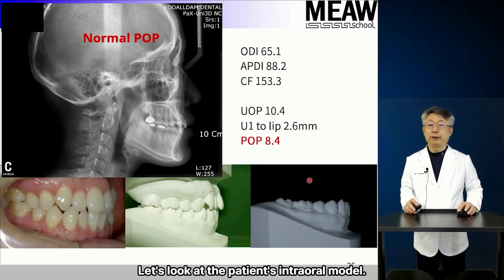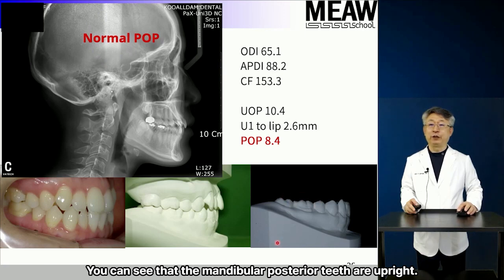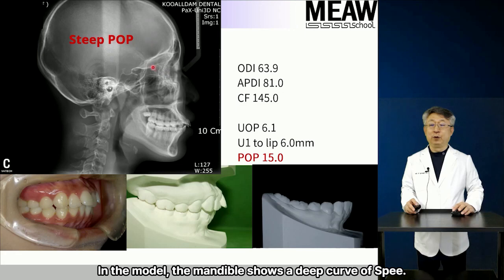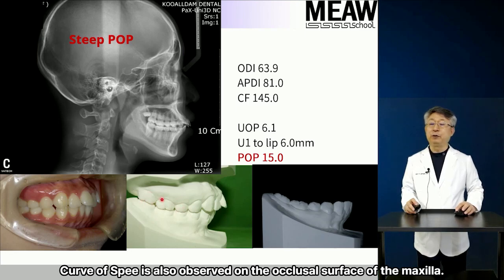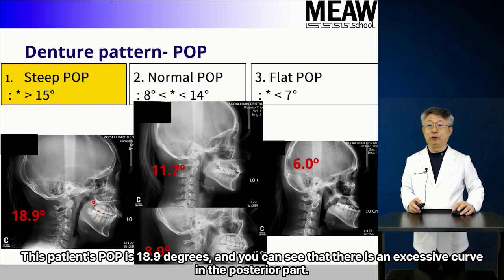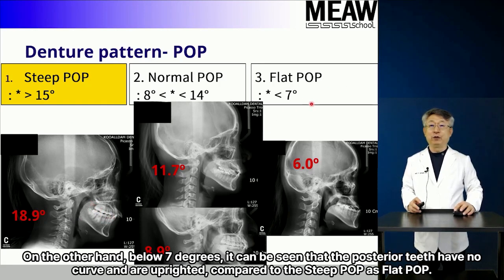Looking at the patient's intraoral model, you can see that the mandibular posterior teeth are upright. This patient's POP is 15 degrees — steep POP — and in the model the mandible shows a deep curve of Spee. The curve of Spee is also observed on the occlusal surface of the maxilla. POP is called steep when it is more than 15 degrees. This patient's POP is 18.9 degrees, and you can see there is an excessive curve in the posterior part. Below 7 degrees, it can be seen that the posterior teeth have no curve and are uprighted — this is flat POP.